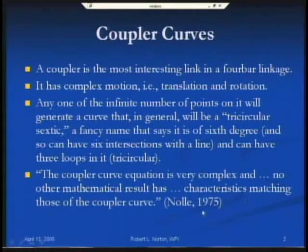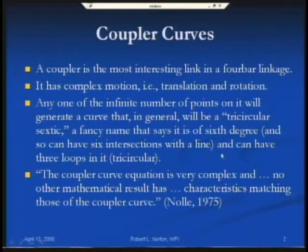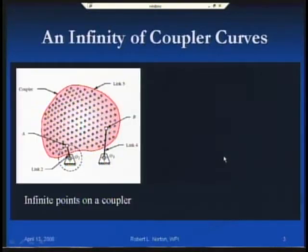Tricircular sextic is fancy terminology indicating that the curve is of sixth degree and can have three loops — that's the tricircular designation. A fellow named Noel back in 1975 commented that the coupler curve equation is very complex and no other mathematical result has characteristics matching those of a coupler curve. You can have an infinity of coupler curves with any one four-bar linkage, and since you can change the link lengths, that means you have multiple infinities of possibilities.